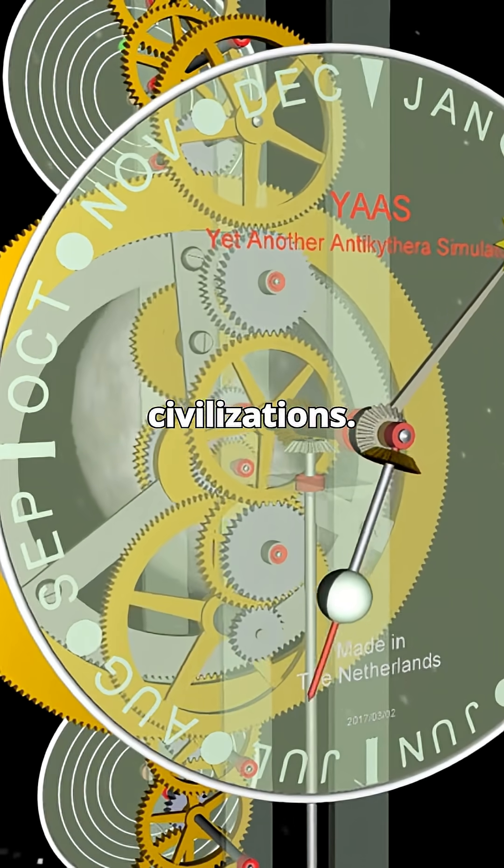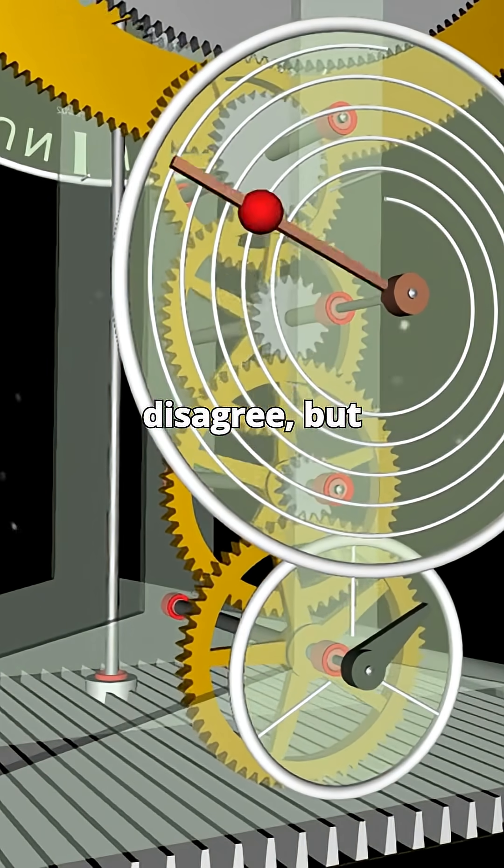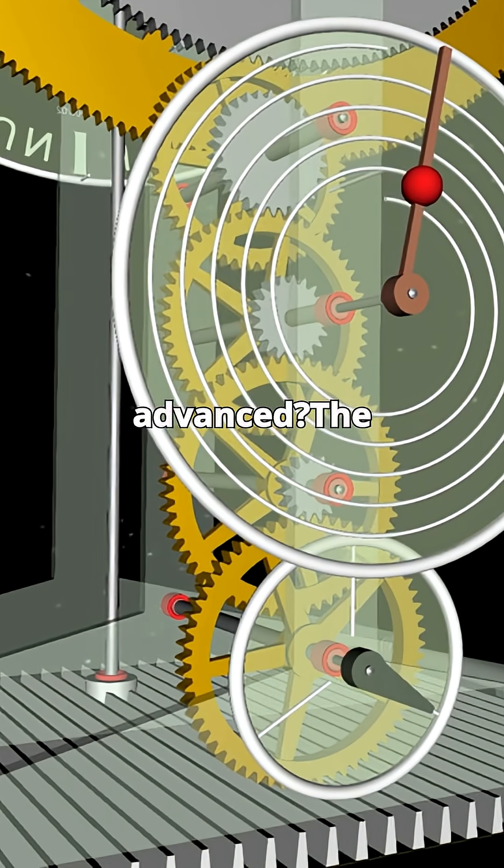Some say aliens or lost civilizations. Most scientists disagree, but the question remains. How did the ancient Greeks build something so advanced?